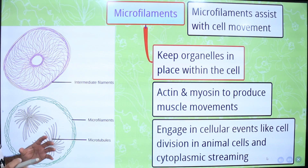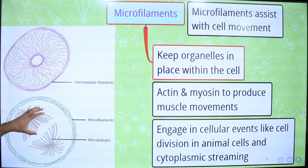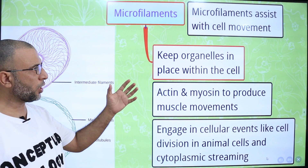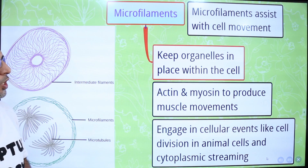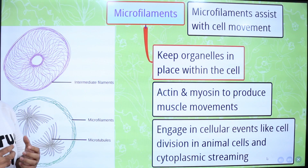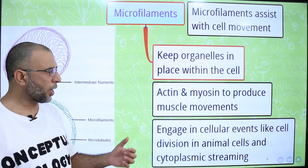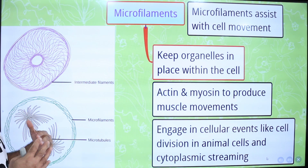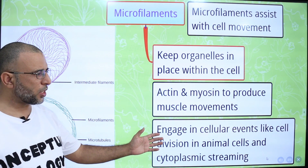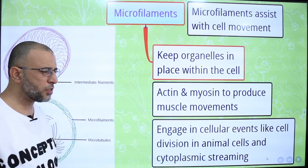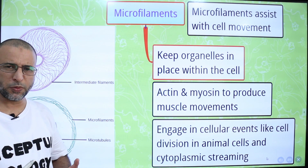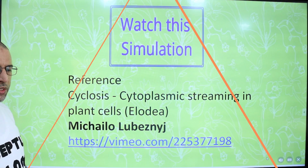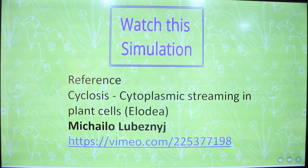Microfilaments keep the organelles in place within a cell, and they assist the cell with movement. Our muscles can contract and relax because they have actin and myosin filaments. The sliding action of actin and myosin filaments helps in the contraction and relaxation of muscles. Microfilaments are engaged in cellular events like cell division in animal cells and cytoplasmic streaming. Cytoplasmic streaming is also known as protoplasmic streaming. It is the movement of cytoplasm within a plant or animal cell.